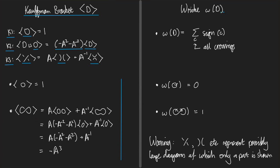Now let me tell you what the writhe is. The writhe is extremely simple. The writhe of a diagram of an oriented link is the sum of the signs of the crossings — the sum over all the crossings. This is not like the linking number; we don't care how many components meet at each crossing. We just sum over all of them.